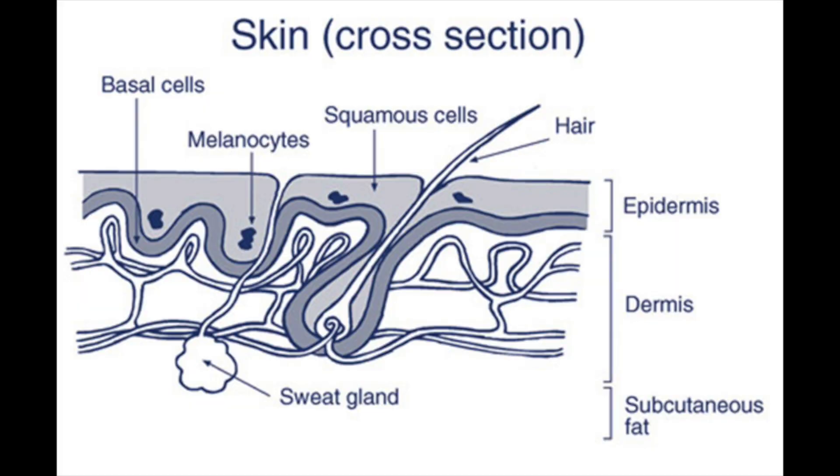These different cancers are named after the cells in which they are developing, and carcinoma, as you might have guessed, is Latin for cancer. In this picture you can see where the basal cells, squamous cells, and melanocytes are located in your skin. Now let's take a closer look at each of these cancers.